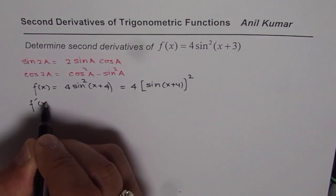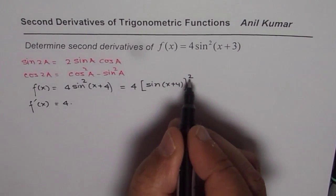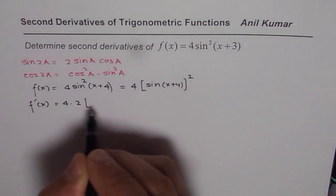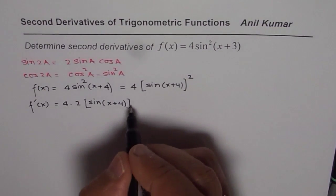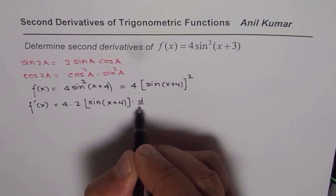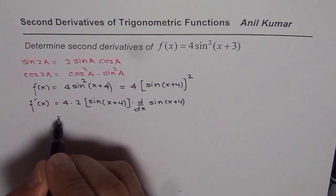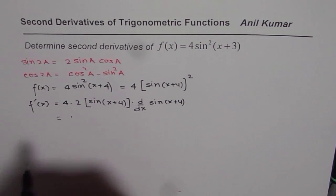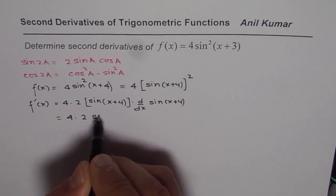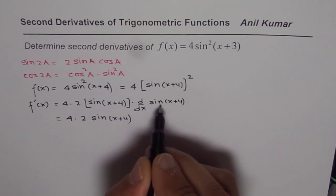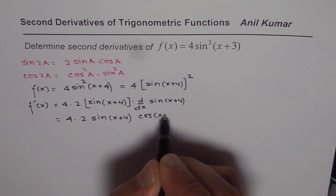So that is what we are going to do to find the derivative of this function. When you apply the power rule, you get 4 times 2 and then sine of x plus 4 to the power of 1, times the derivative of the inside function. The derivative of sine of x plus 4 is cos of x plus 4.